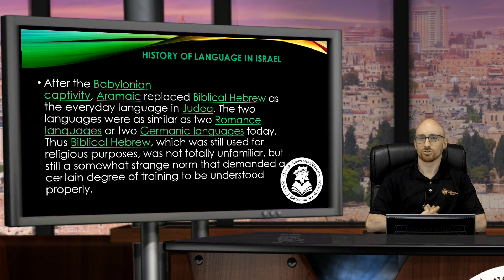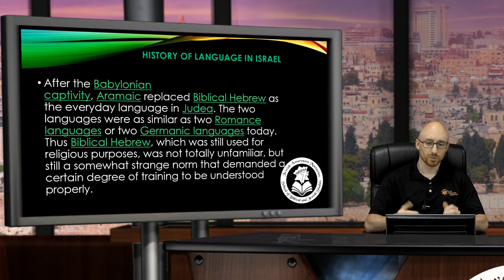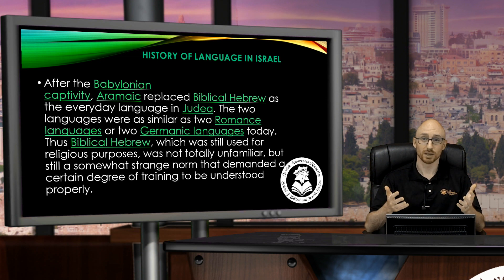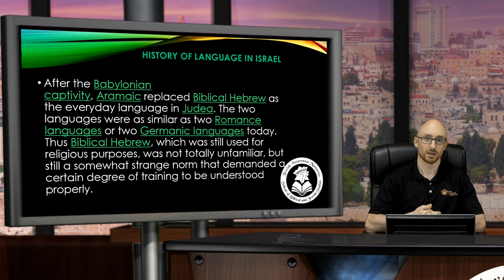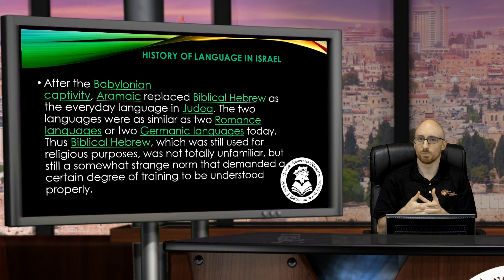Some of these quotes I'm about to share are from a Wikipedia article, the link for which I'll give in a couple of slides. It talks about how the language progressed in the land of Israel, especially in the first century. After the Babylonian captivity — when Daniel, those three Hebrew children, and all the other Jewish people were taken captive from the land of Judah to Babylon in 586 B.C. — when they returned to the land 70 years later, Aramaic replaced Biblical Hebrew as the everyday language in Judea.